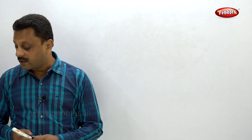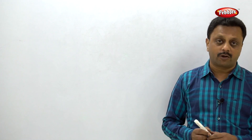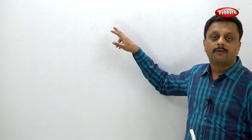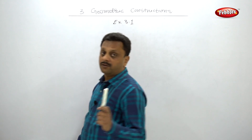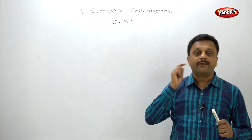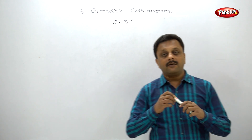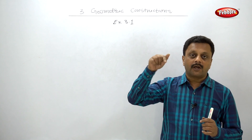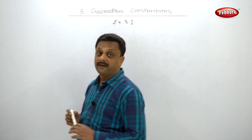Example five: construct the incircle of triangle RST in which RS is 6 cm, ST is 7 cm, and RT is 6.5 cm. Three side measurements are given, so draw the base, then use arcs for the two sides — the point of intersection of those arcs is the third point. For the incircle, draw angle bisectors of any two angles to get the incenter, then draw a perpendicular from that center to any one side to find the radius.